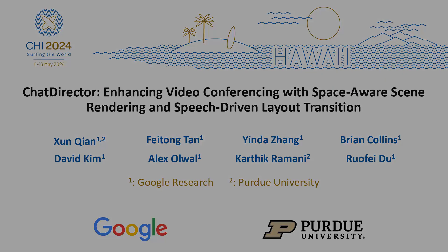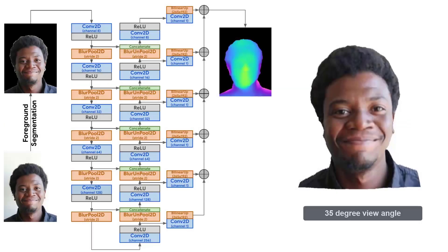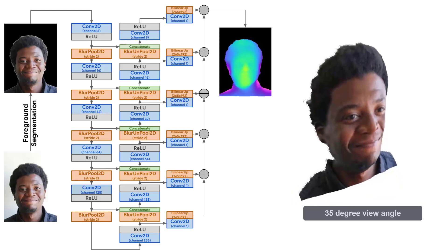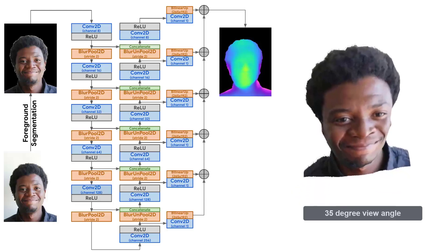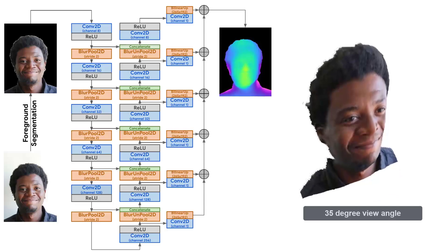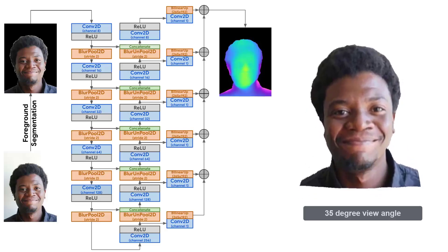We propose ChatDirector, a novel remote video conferencing system that uses a common device such as a laptop to provide both space-aware visual presence and speech-aware attention transition assistance. In ChatDirector, we train a lightweight depth estimation model and adopt a shader to reconstruct remote participants as 3D portrait avatars in real-time using simple RGB video streams as the input.